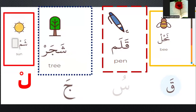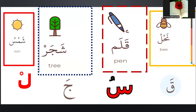Number four: what can you see? It's a sun — sun in Arabic means shams. Which letter is at the end? Yes, letter sin — shamsu. It's shamsu.